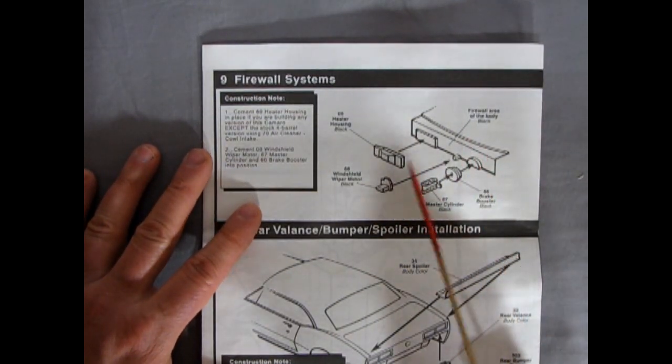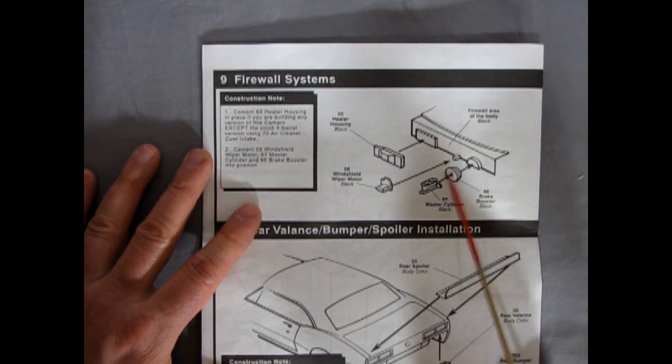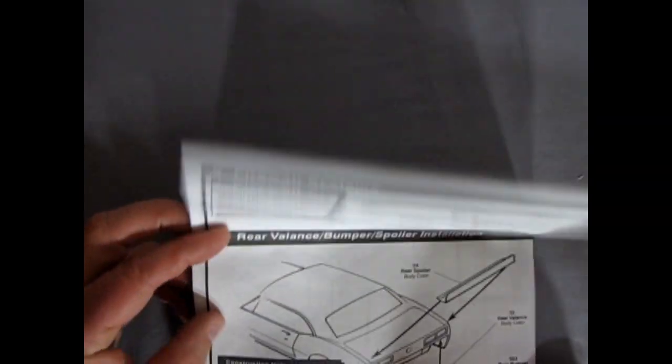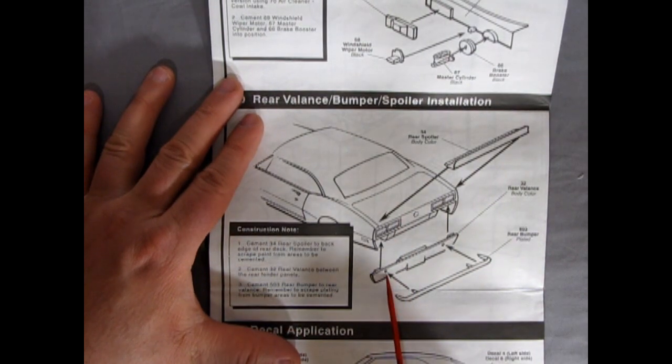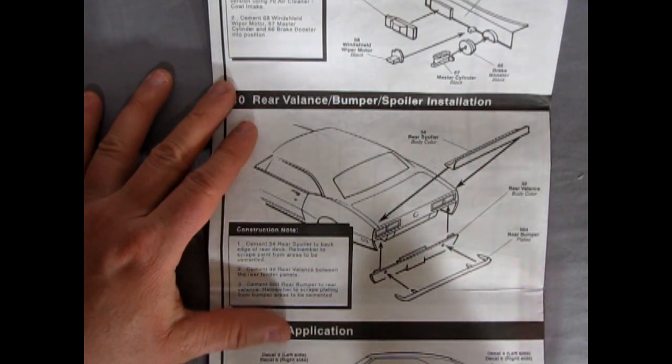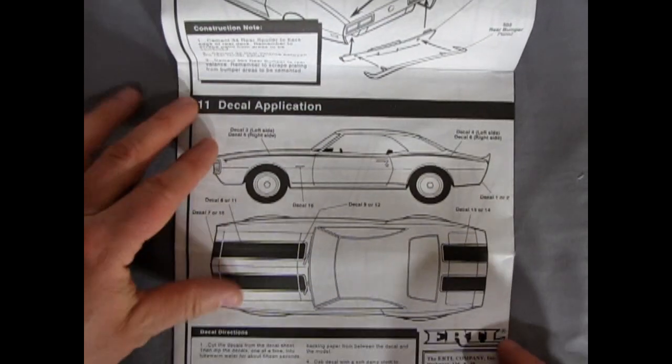And then here we've got our firewall. This is very basic. There's a heater housing, windshield wiper motor, your master cylinder, and the brake booster sitting on there. And then here we have our rear spoiler going on, our rear valence, and the rear bumper. And then the final panel is the decal placement.